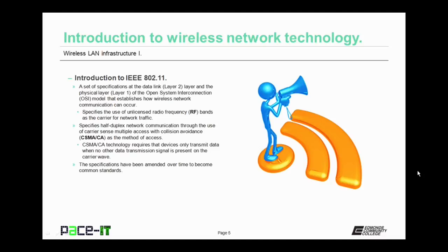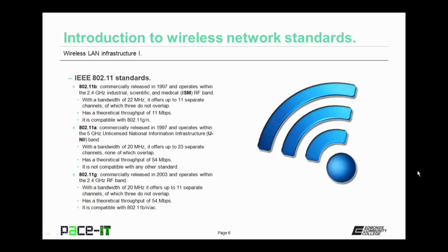The 802.11 standards have been amended over time to become our common standards that we see today. These include the 802.11b wireless standard. It was commercially released in 1997 and operates within the 2.4 gigahertz industrial, scientific, and medical radio frequency band. Within the 2.4 gigahertz RF band, it uses multiple channels that are 22 megahertz wide. There are 11 separate channels of which only three do not overlap. 802.11b has a theoretical throughput of 11 megabits per second, and it is compatible with the 802.11g and n standards.